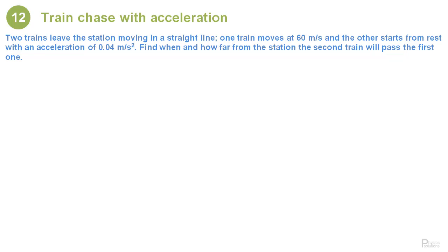Step one in my personal recipe is always go through the exercise one more time and have a look at the relevant quantities that are given. First of all we know that the two trains are moving in the same direction. That is very important. We know the speed of the train that moves with constant speed and we know the acceleration of the second train. We're being asked to find the time and the distance from the station where the speeding train will pass the first one.